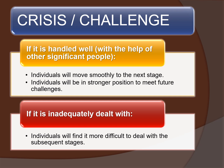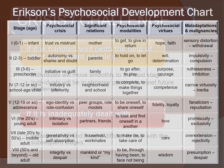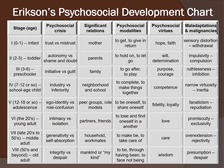The crises and challenges that individuals come across — if handled well with the help of significant people, individuals will smoothly move on to the next stage. If inadequately dealt with, individuals will find it more difficult to cope. Erikson's psychosocial development chart maps each stage with its psychosocial crisis, significant relations, psychosocial modalities, virtues, and maladaptations.